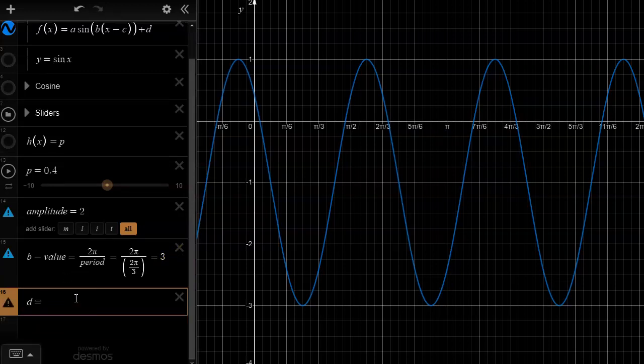The d value is simply the median. The median is really that horizontal line that splits the sinusoidal graph into an upper half and a lower half. You can pretty much eyeball it here, it looks like it's around negative 1. You're not always going to be able to eyeball it because the numbers aren't going to be so small.